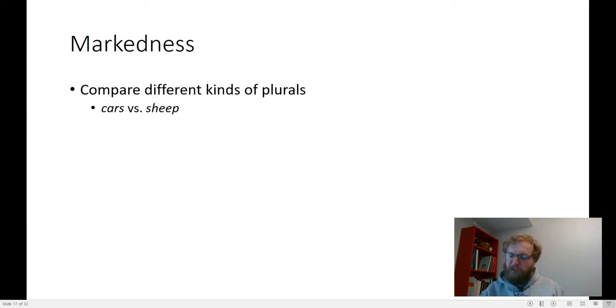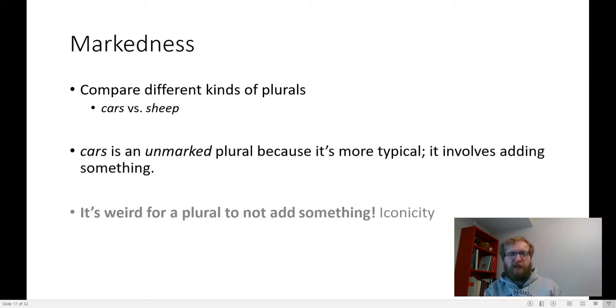Also, we can compare two different kinds of plurals in terms of their markedness, cars versus sheep. Sheep is a weird plural. Sheep doesn't add anything. You can't tell the difference between one sheep, two sheep. Cars is an unmarked plural because it's a normal plural. It's just a regular old s. Irregular plurals are sort of marked.